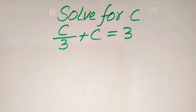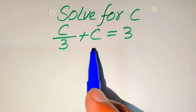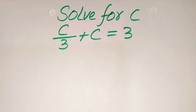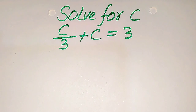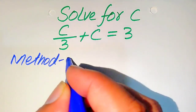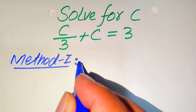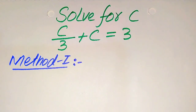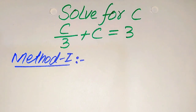Hello everyone. How to solve this problem for the values of C: C divided by 3 plus C equals 3. We solve this problem for all the values of C. First we find all the roots of this equation, and at the end we will verify which of the roots are solutions and which are extraneous roots. We will solve this problem using two methods.